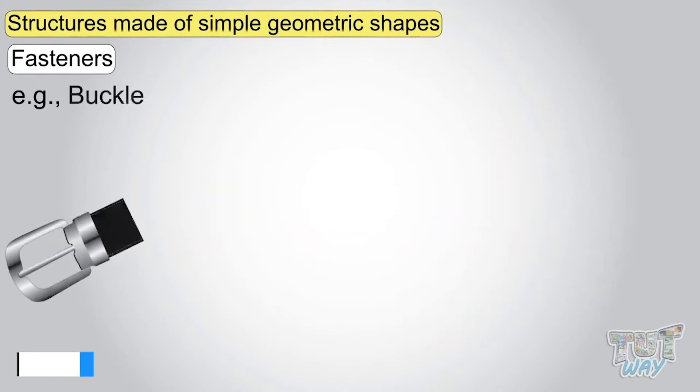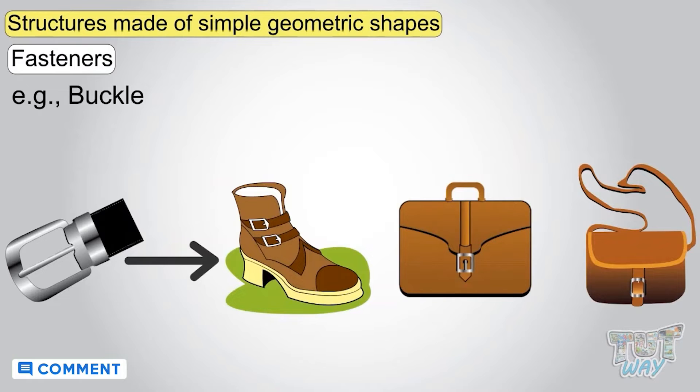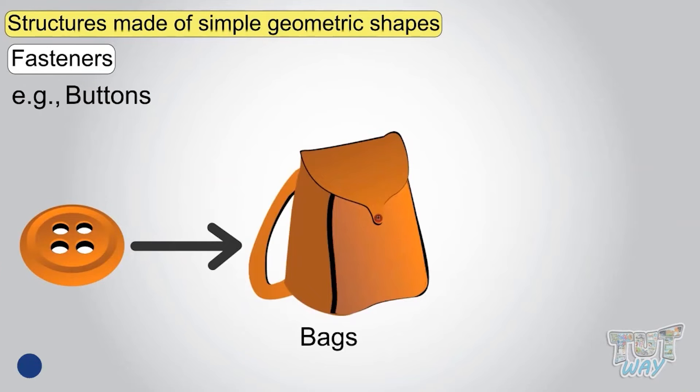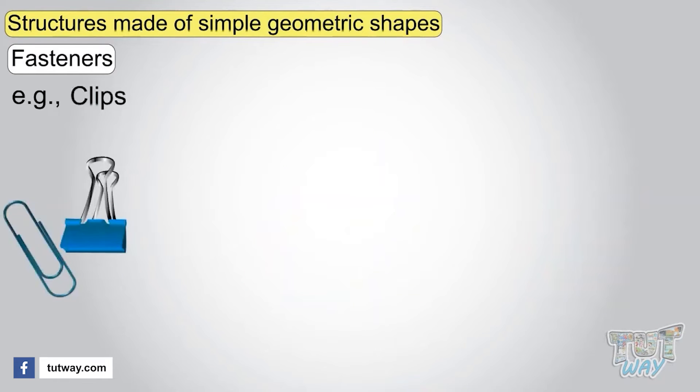Buckles too is a simple fastener that is used in shoes, bags and purses. Buttons too are simple fasteners that are used in bags and clothes. Clips are yet another fastener used in papers and cardboards.